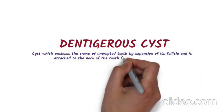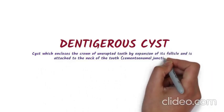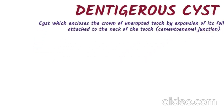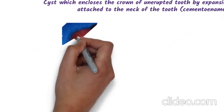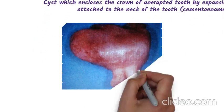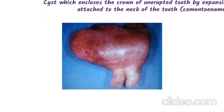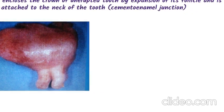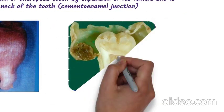Dentigerous cyst is a cyst which encloses the crown of an unerupted tooth by expansion of its follicle, and is attached to the neck of the tooth or cementoenamel junction.